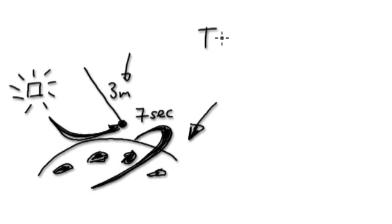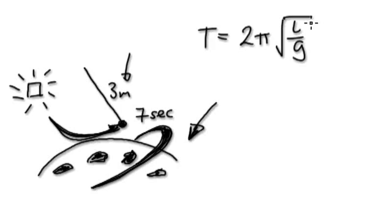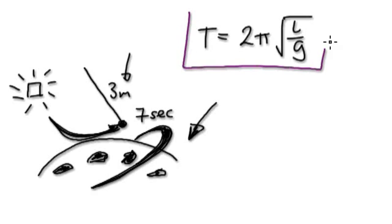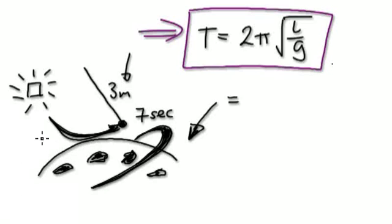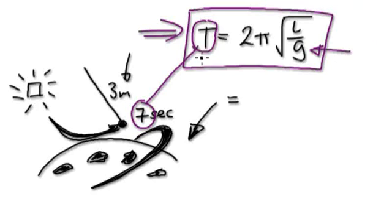Here's the magical formula: T equals 2π root L over G. Write this down — it's a really good formula. We want to work out G of this planet. We know T — it's seven seconds — and we know L, which is three meters. So the only thing we don't know is G.